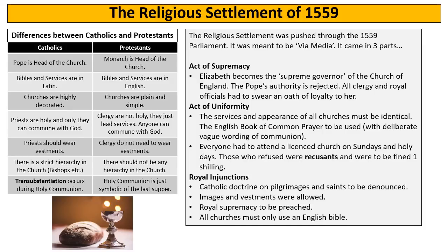Finally, the last part was the royal injunctions. Catholic beliefs about pilgrimages and saints were to be denounced. Images in churches, decoration and vestments were to be allowed. The royal supremacy — the fact that the monarchy is in charge of the Church — was to be preached and taught, and all churches must use an English Bible.